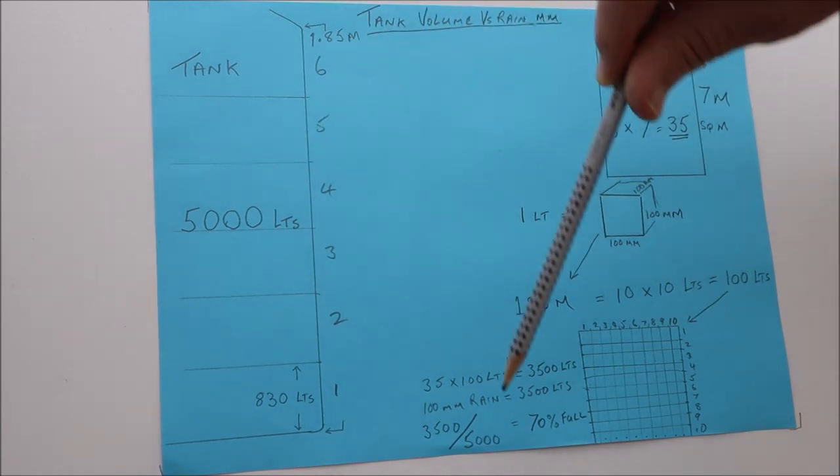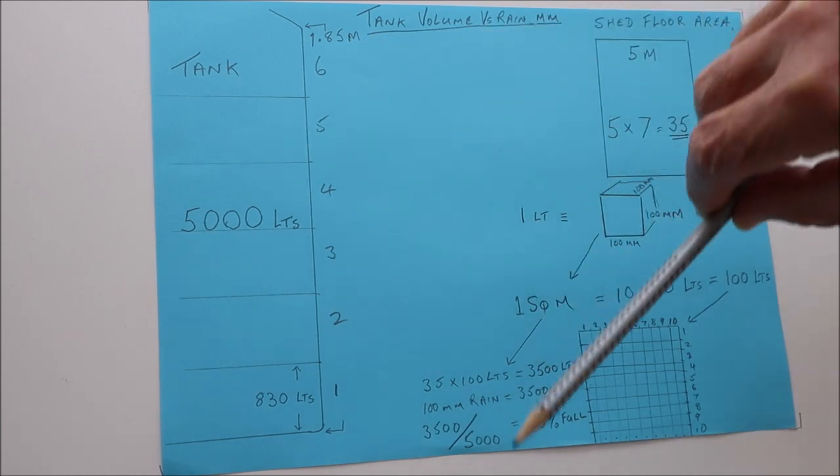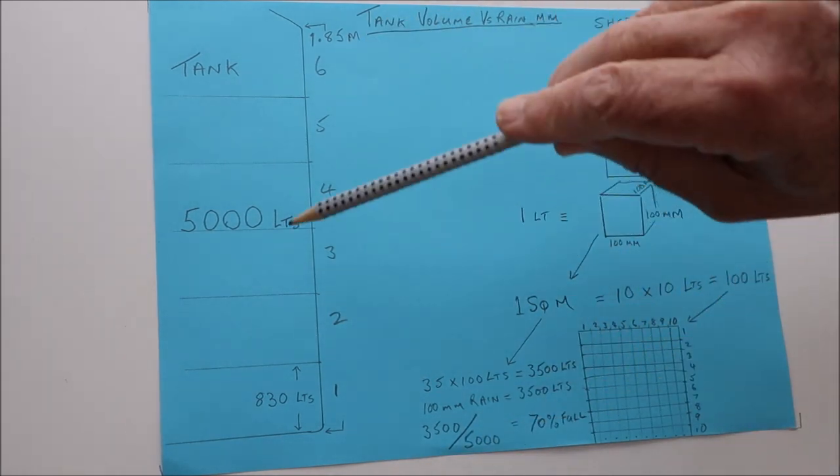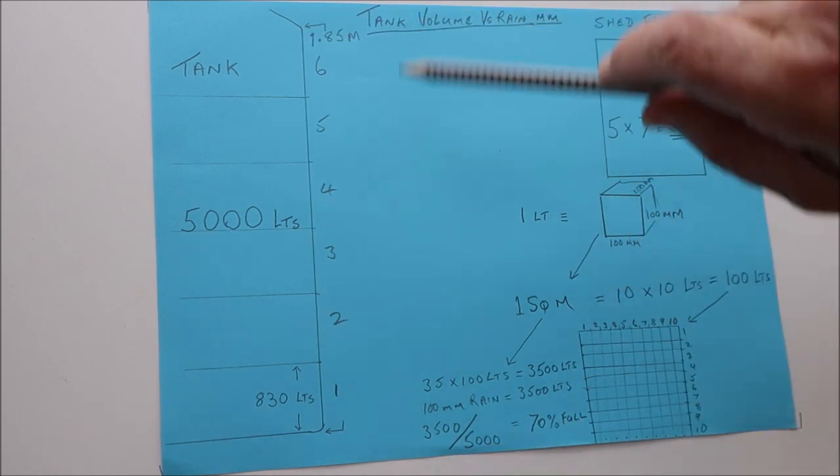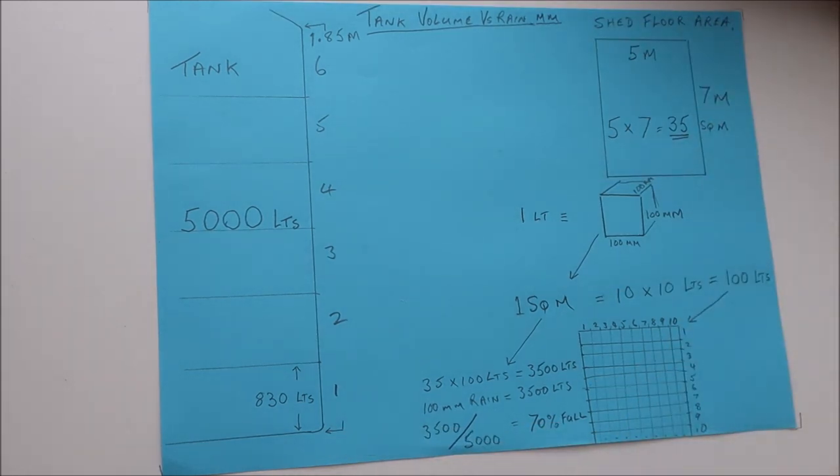It's divided into six rungs which you can see on the outside of the tank. If we divide 5,000 by 6, we get about 830 liters per rung. The tank total height is 1.85 meters, so each rung is about 28 centimeters. What I want to work out is how much water is going to run off the roof into the tank for each millimeter of rain that we get.